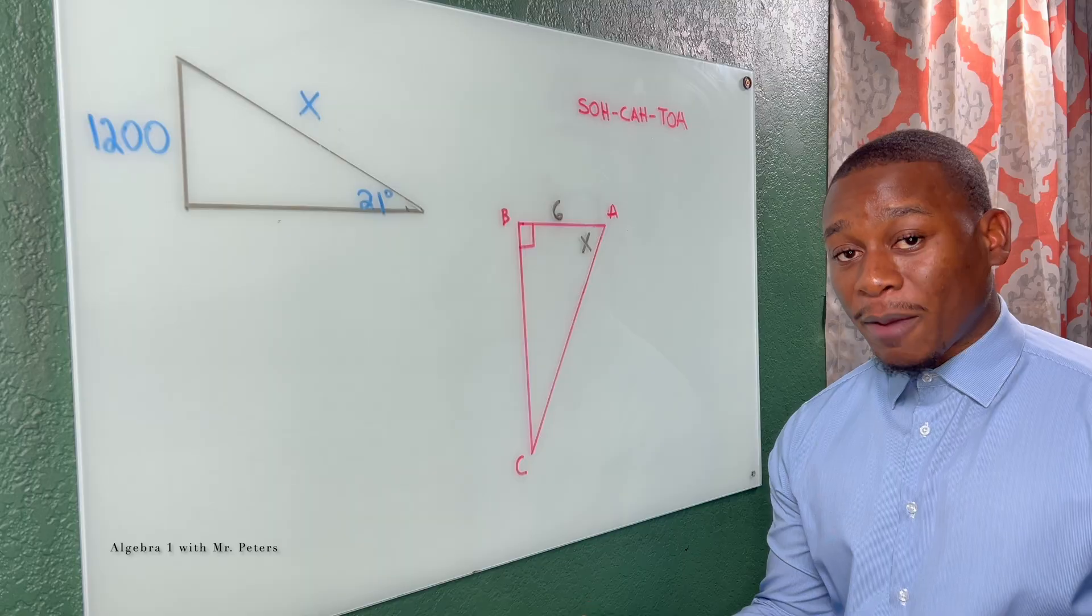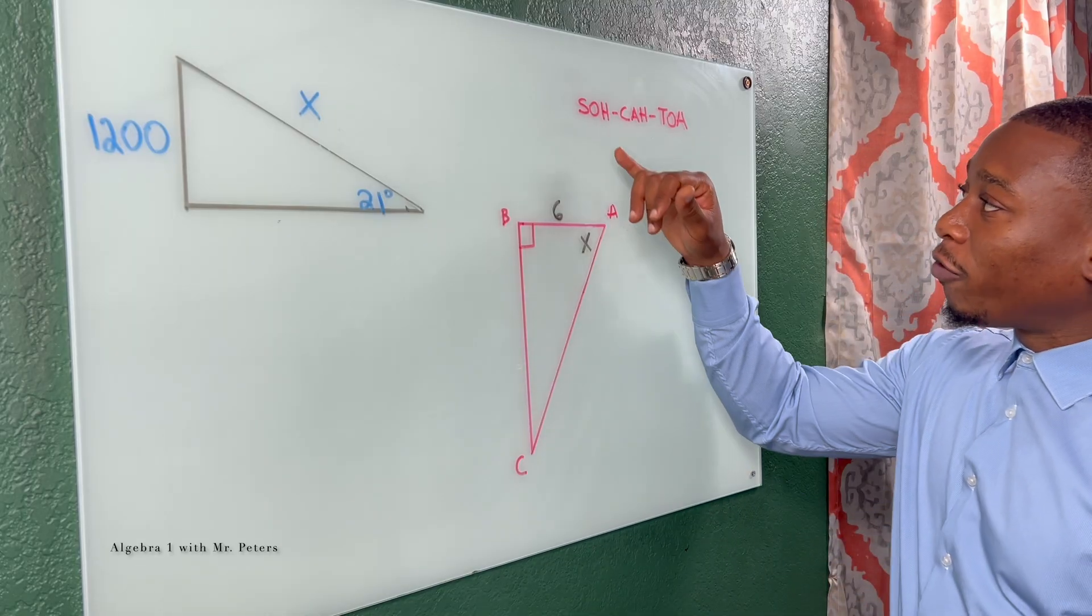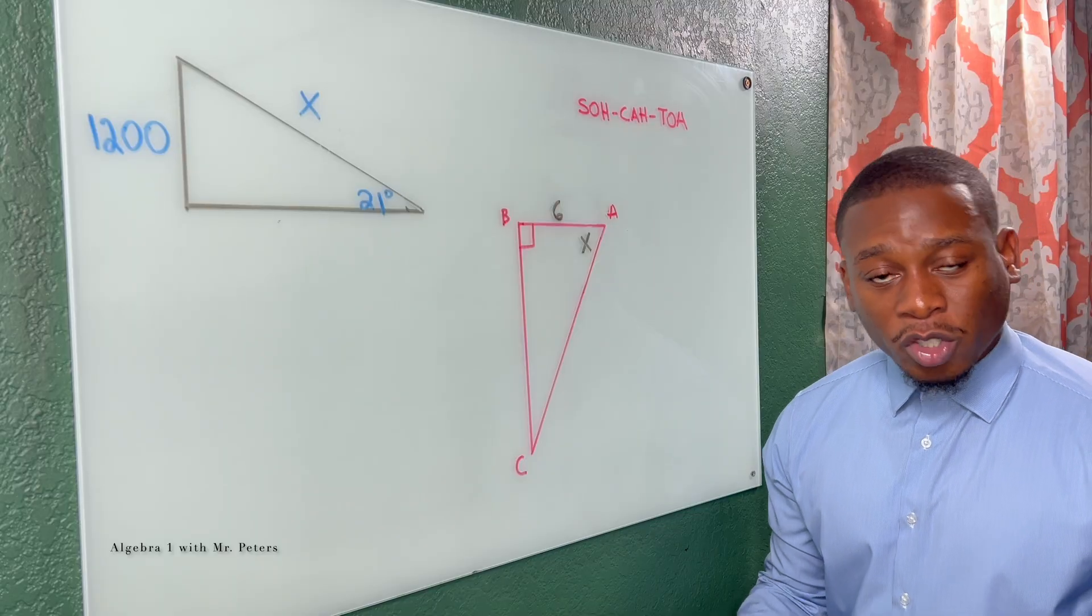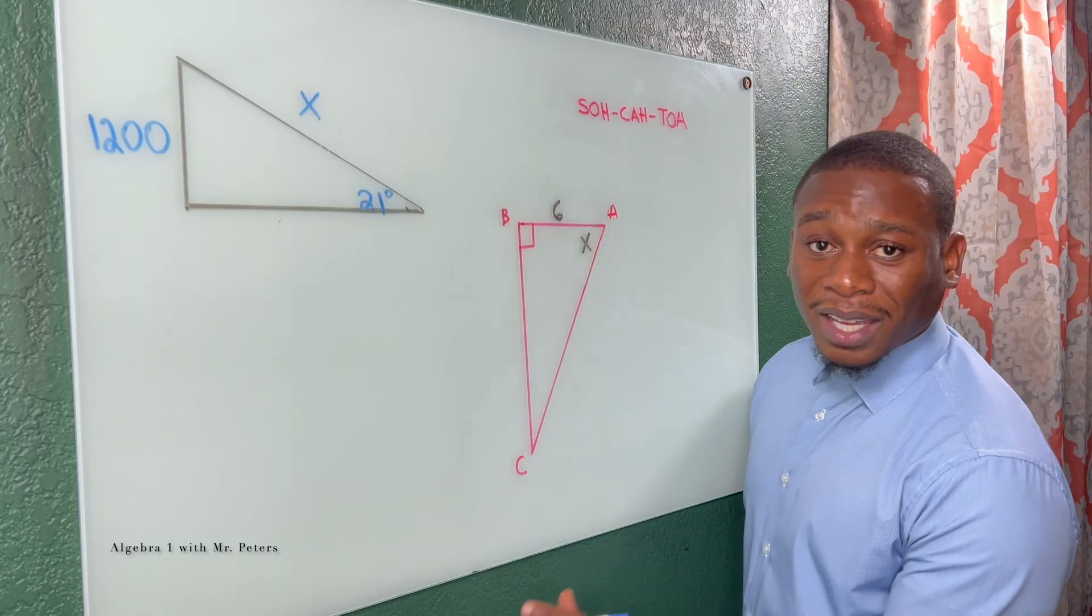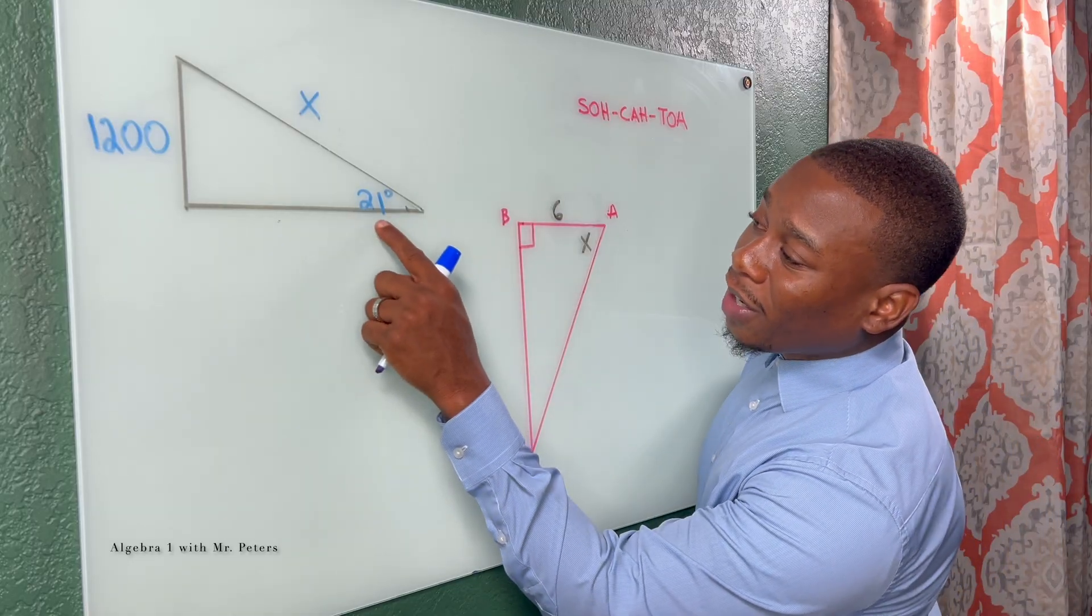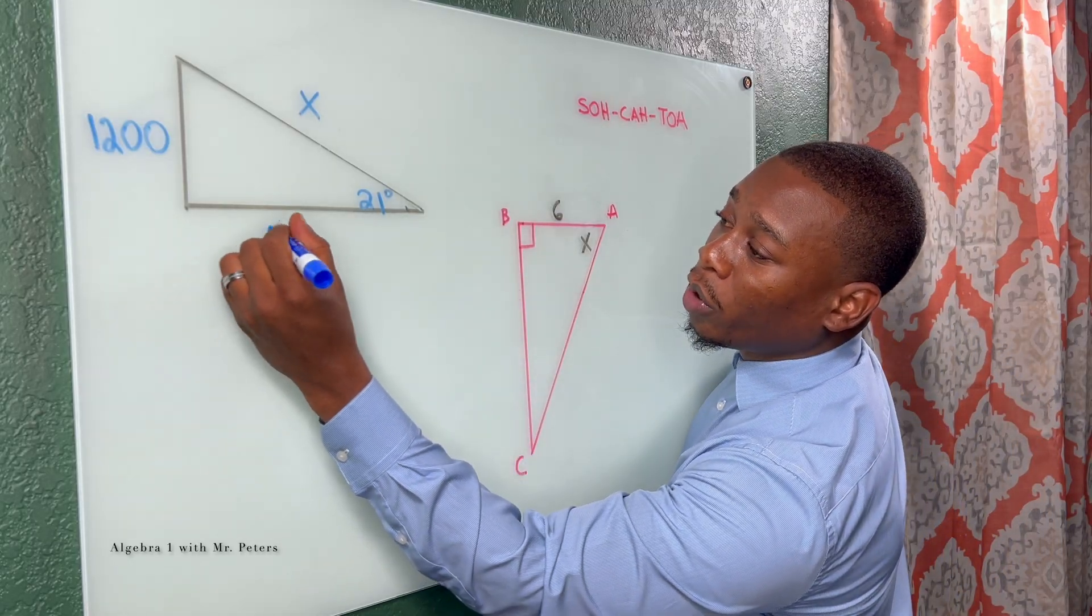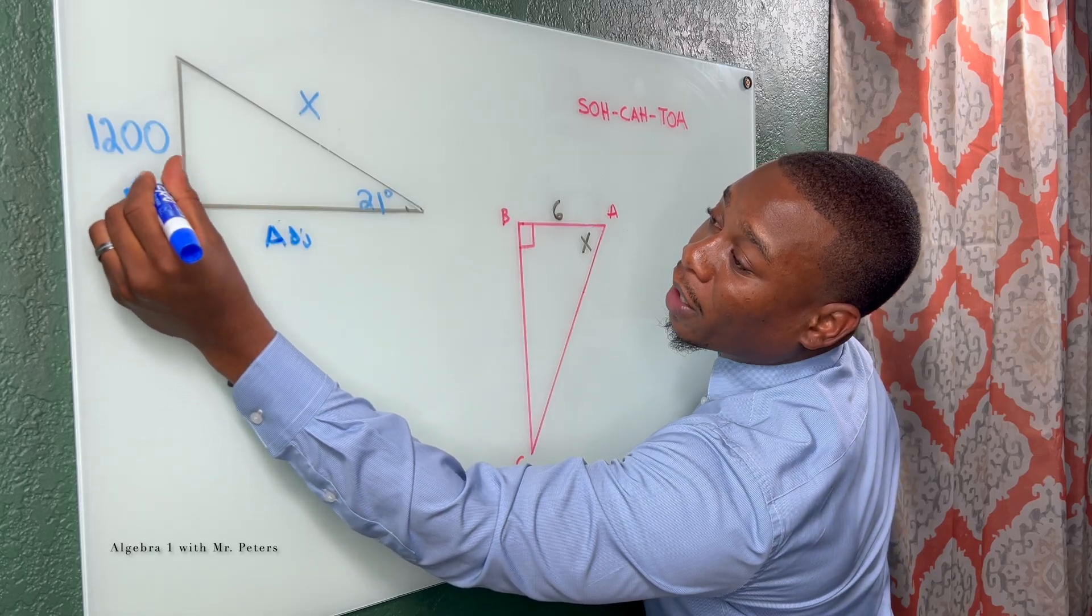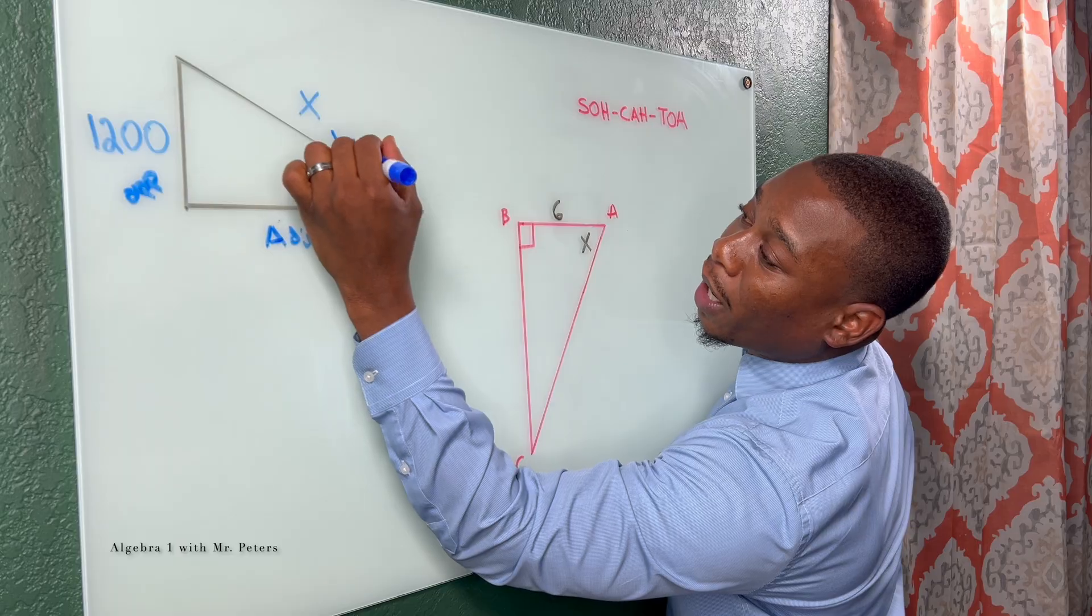When we're looking at these type of problems, we should already be familiar with the SOHCAHTOA acronym and the trig functions. So my first tip to you is always to label the sides so you don't confuse it at all. So this is the angle we're talking about. We know this is the adjacent side, this is the opposite side, and this side represents the hypotenuse.